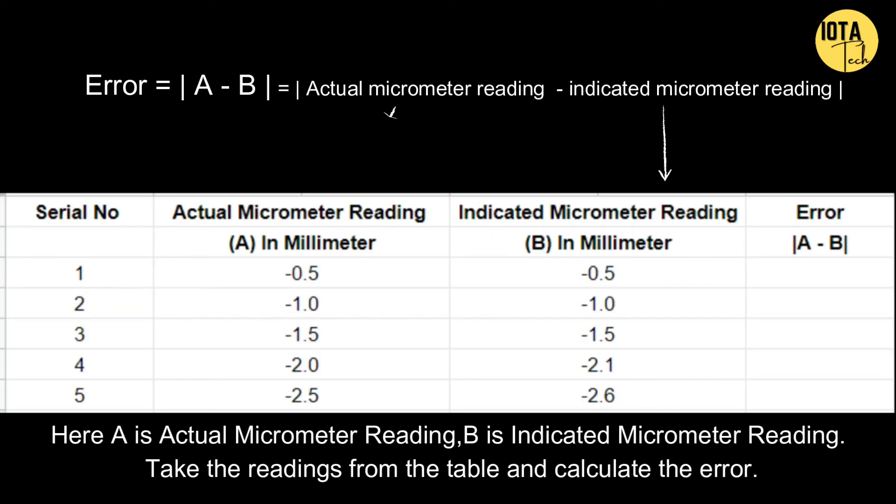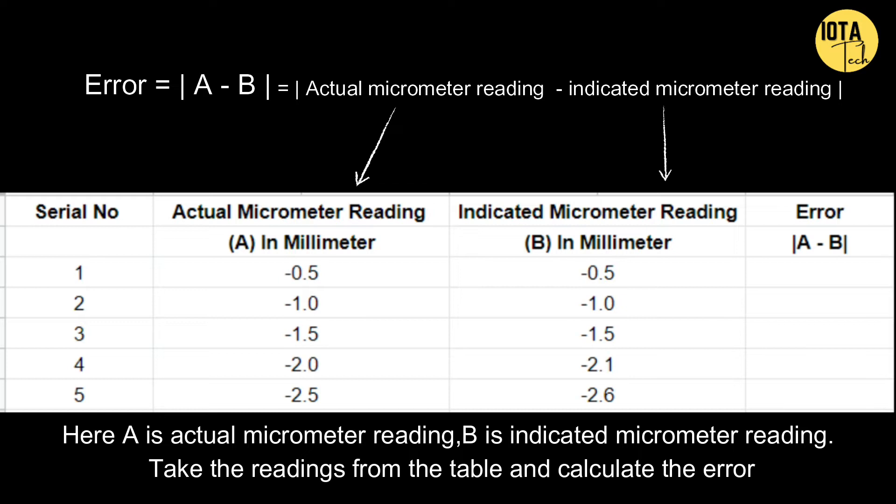The value of A is taken from the actual micrometer reading column and the value of B is taken from the indicated micrometer reading column. Take the readings from the table and calculate the error.